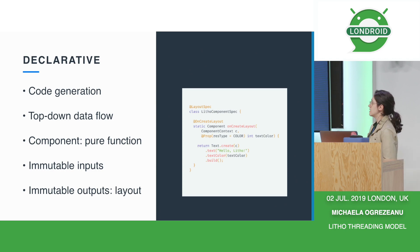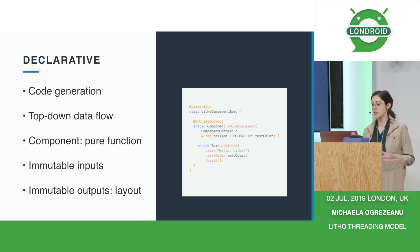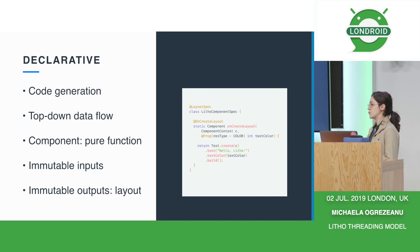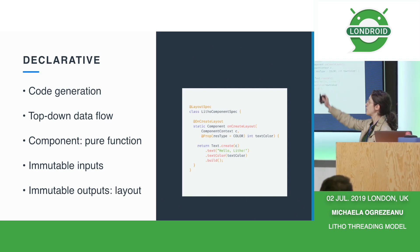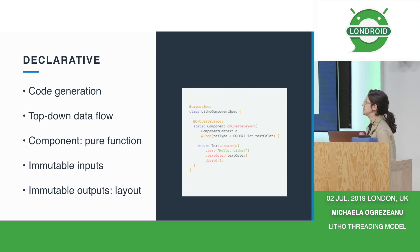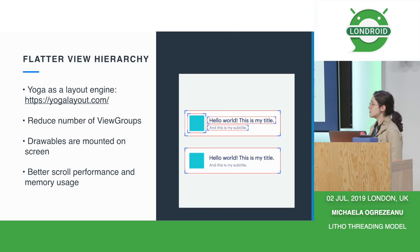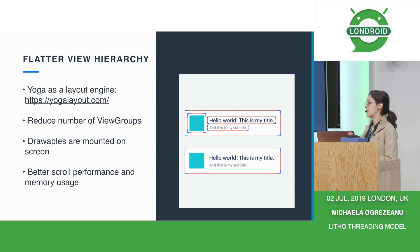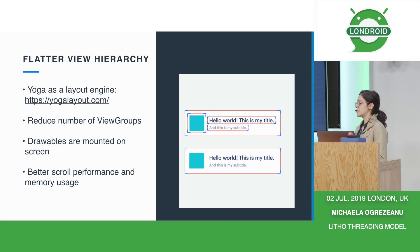From this layout, we use an annotation processor to generate a class that we call a component, which you can think about as a pure function. So it takes immutable inputs as props, which we declare with a special prop annotation, and it spits out output in the form of immutable layout. Another feature of Litho is that it automatically flattens your views wherever possible. It uses Yoga as a layout engine, and that unlocks a bunch of possibilities for us.